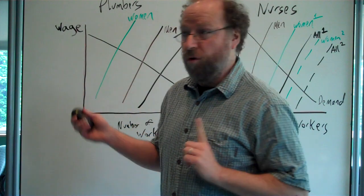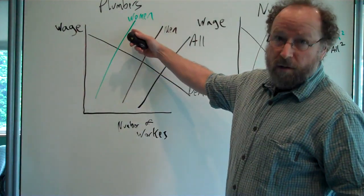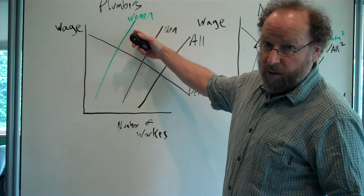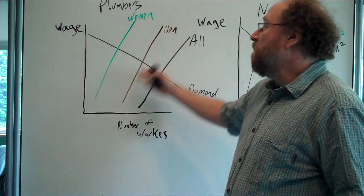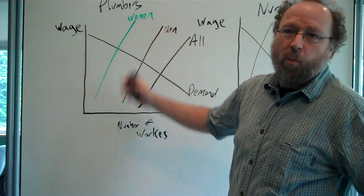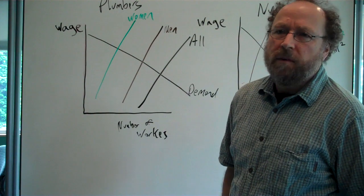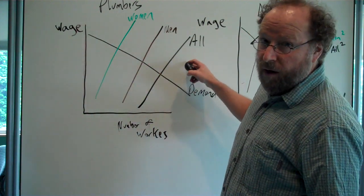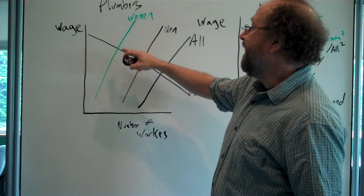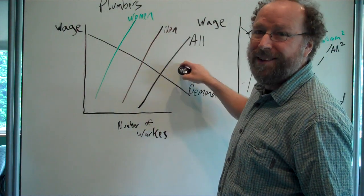And here's how it works. Imagine plumbing. A labor supply curve of women, a labor supply curve of men. The way I've drawn this, more men than women at any wage want to be plumbers. Doesn't matter. You could draw them equally. The total labor supply for plumbing is the number of women at some wage plus the number of men total.